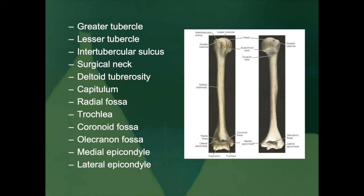At the distal end of the humerus, several landmarks become important. The capitulum is a rounded knob that articulates with the head of the radius. The radial fossa is a depression which receives the head of the radius when the forearm is flexed — as the forearm closes that angle, the radius articulates with the radial fossa of the capitulum. The trochlea is a pulley-like surface that articulates with the ulna, though the radius and ulna articulate somewhat differently with the distal end of the humerus.